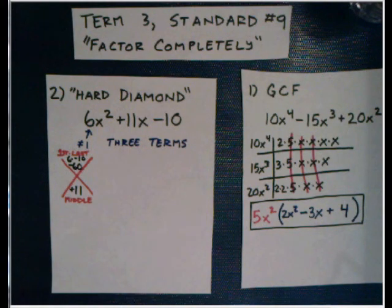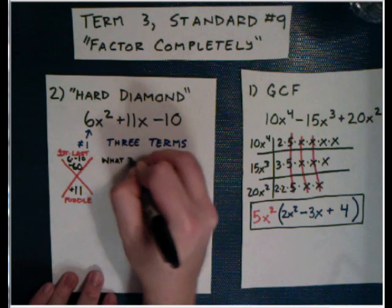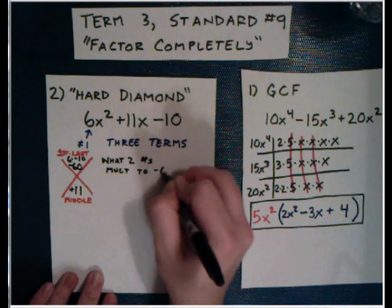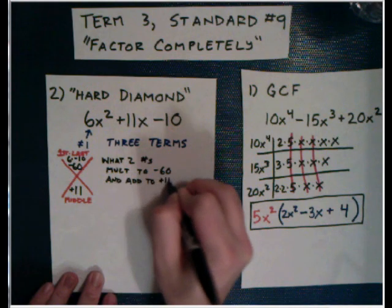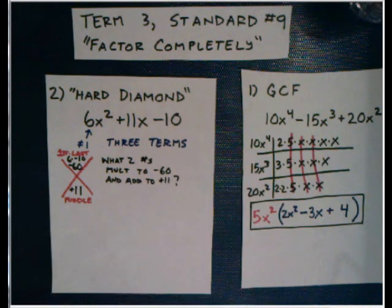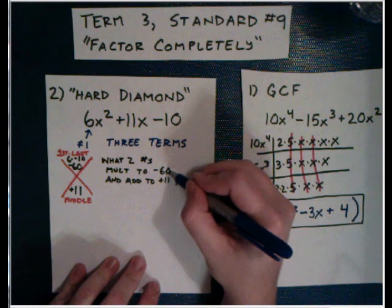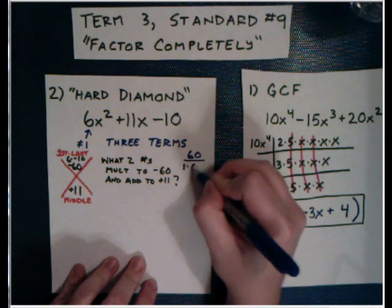Now what we need to do is we need to figure out what two numbers multiply to negative 60 and add to positive 11. If you're good with number facts and good with prime factoring, you might be able to come up with the answer really quickly. In a problem like this, maybe you can't. So what I'm going to do is brainstorm factor pairs of 60, because we need to figure out what those factor pairs are to see if they add or subtract to 11. So 60: we've got 1 times 60, that's not going to work. 2 times 30. No. 3 times 20.